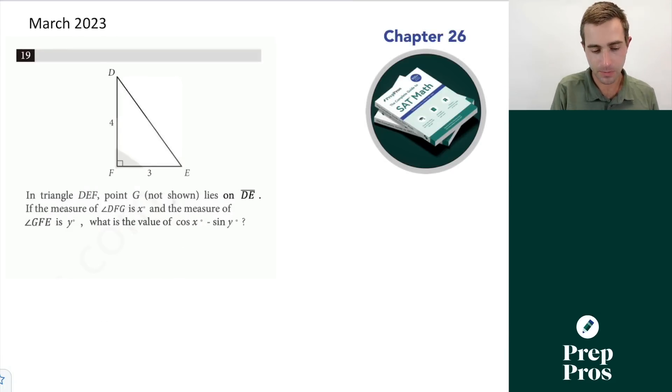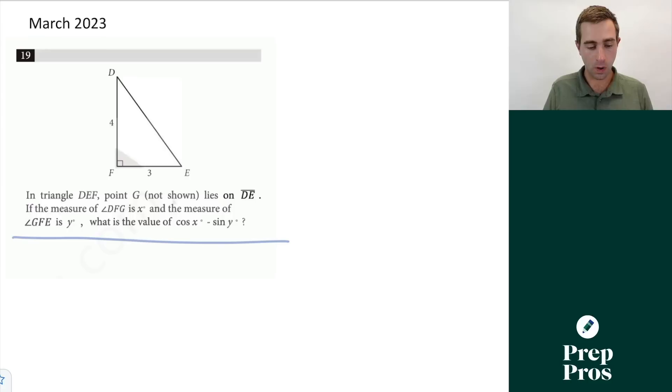Now for 19 here, in triangle DEF, point G not shown lies on DE. If the measure of angle DFG is x degrees and the measure of angle GFE is y degrees, what is the value of cosine of x minus sine of y? This was back on the test I got a perfect score on, so I remember exactly how to do this question pretty quickly. But this is also an SAT classic. This is their favorite trig identity they love to test on. This is that the sine and cosine of complementary angles, where the two angles add up to 90 degrees, they're always equal to each other. And that's what's happening here. The cosine of x is always going to be equal to the sine of y. So since these are equal to each other, anything minus itself always is going to equal zero. And that's just one of those things you have to know if you're looking to get a really high score on the SAT.